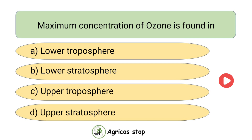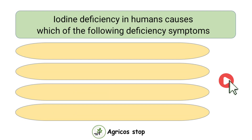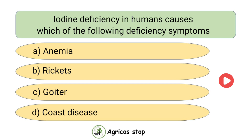Maximum concentration of ozone is found in which layer? Options are Lower Troposphere, Lower Stratosphere, Upper Troposphere, and Upper Stratosphere. The answer is Lower Stratosphere. Maximum concentration of ozone is found in the Lower Stratosphere.